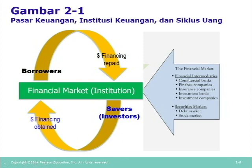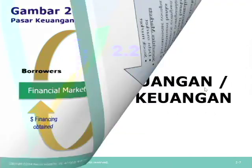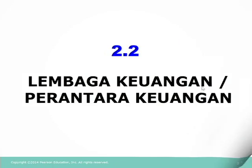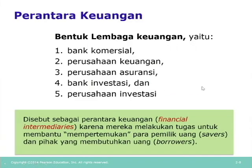Terdapat paling tidak lima bentuk lembaga keuangan selaku perantara keuangan atau financial intermediaries. Yang pertama adalah commercial bank atau bank komersial, yang kedua adalah perusahaan keuangan, yang ketiga adalah perusahaan asuransi, yang keempat adalah bank investasi, dan yang kelima adalah perusahaan investasi.